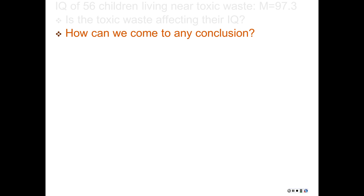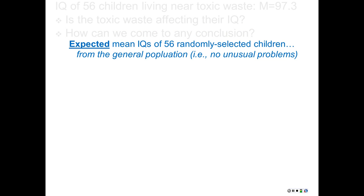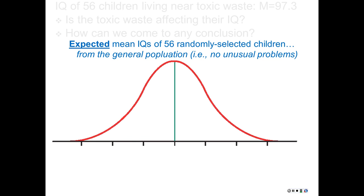So we can make an inference about the population based on this sample. The expected mean IQ of 56 randomly selected children from the general population who have no unusual problems — they wouldn't all have a mean of 100, they would be distributed. And this is how it would be distributed. That green line is the mean. This is like a continuous histogram — this is a normal distribution.